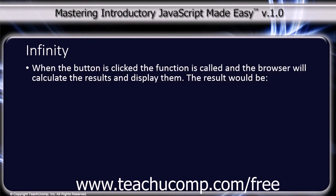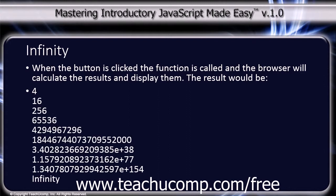When the button is clicked, the function is called and the browser will calculate the results and display them. The result would be 4, 16, 256, 65,536, on through infinity.